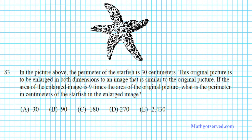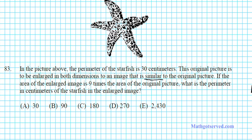Let's take a look at problem number 83. It says, in the picture above, the perimeter of the starfish is 30 centimeters. This original picture is to be enlarged to a much larger picture in both dimensions to an image that is similar to the original picture. So there is the whole idea of scaling again. If the area of the enlarged image is nine times the area of the original picture, what is the perimeter in centimeters of the starfish in the enlarged image? So this is another problem on scale factor.